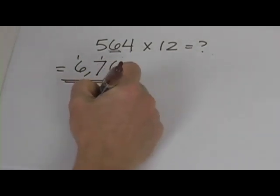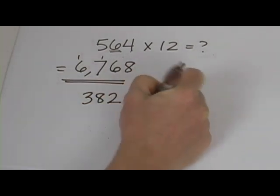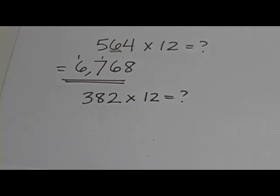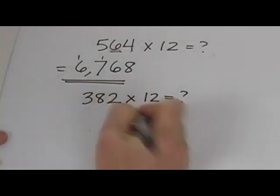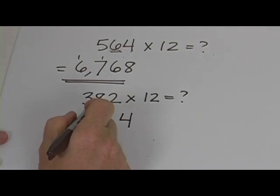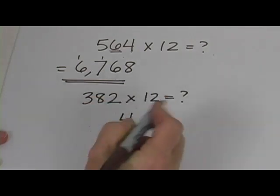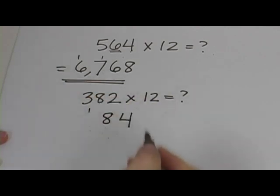How about 382 times 12? Okay. So take the 2 and double it. So that would be 4. Take the 8 and double it. 16 plus 2 is 18. So you put the 8 here and put a little 1 there to remind you.